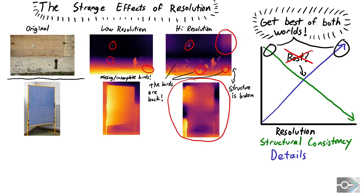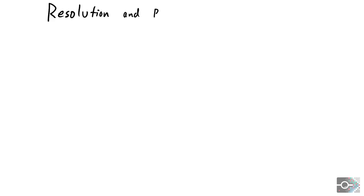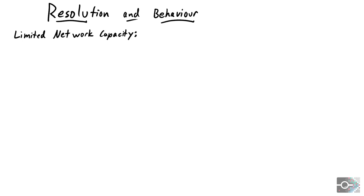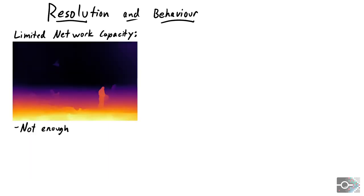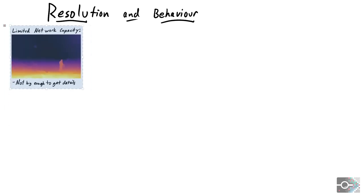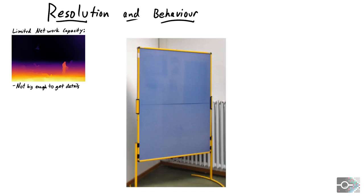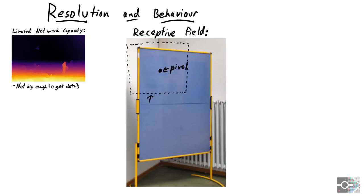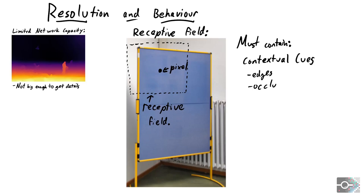We explain this behavior through two properties of convolutional neural networks: limited receptive field size and network capacity. The lack of high frequency details at low resolutions is due to limited network capacity — a small network that generates the structure of a complex scene cannot also generate fine details. The loss of structure at high resolutions comes from a limited receptive field size. The receptive field is set by the network configuration and training resolution, and gets smaller as resolution increases.